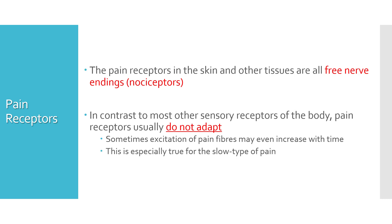Now let's look at some of the basic anatomical and biochemical aspects of pain. Pain receptors in the skin and other tissues are all free nerve endings — there are no special receptors, they are basically free nerve endings, and these are also called nociceptors. In contrast to most other sensory receptors of the body, pain receptors usually do not adapt. As long as the stimulus is there, these receptors will keep on firing and keep on sending the signal to the brain. Sometimes excitation of pain fibers may even increase over time, and this is especially true for the slow type and chronic pain.